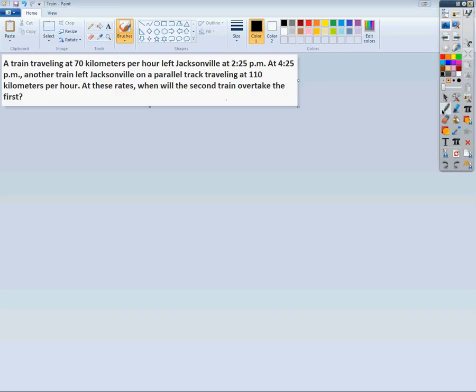Hey Eden, I'm going to try to help you with this problem. The question says a train traveling 70 km per hour left Jacksonville at 2:25. At 4:25, another train left Jacksonville on a parallel track traveling at 110 km per hour. At these rates, when will the second train overtake the first?